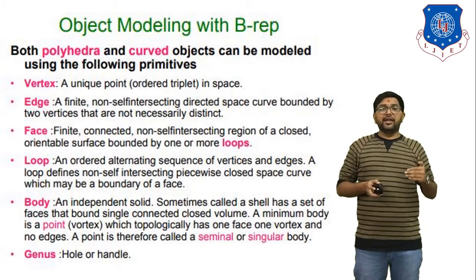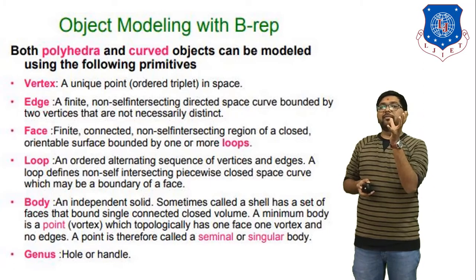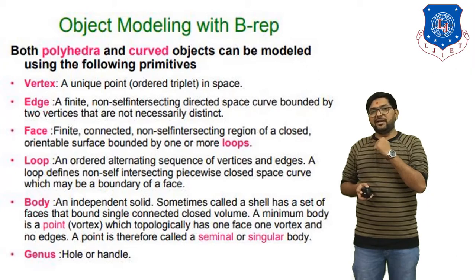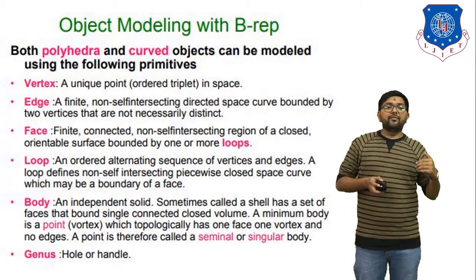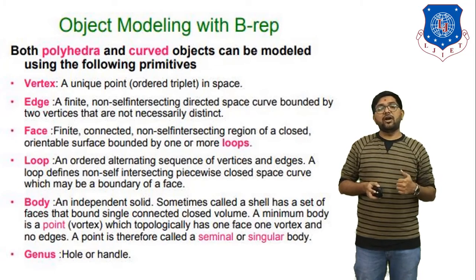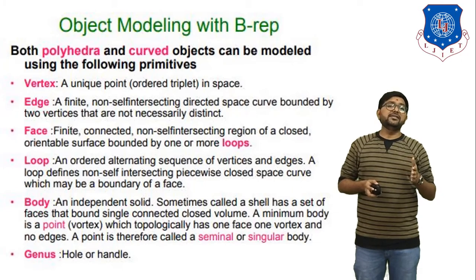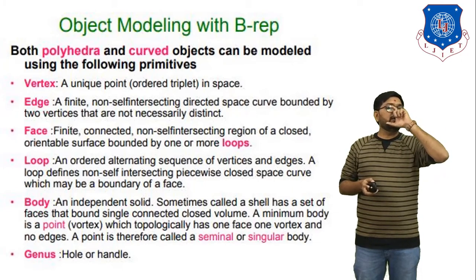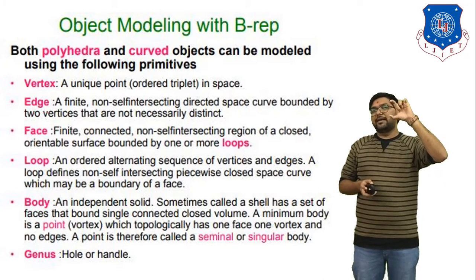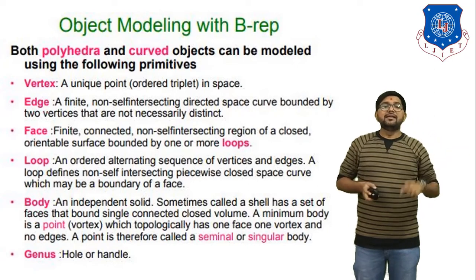The second primitive is an edge. A cube has a total of 12 edges. An edge is a finite and non-self-intersecting directed space curve bounded by two vertices that are not necessarily distinct. If you connect two vertex points you generate one edge — if you combine two vertices with a straight line, that straight line is considered an edge of the cube.